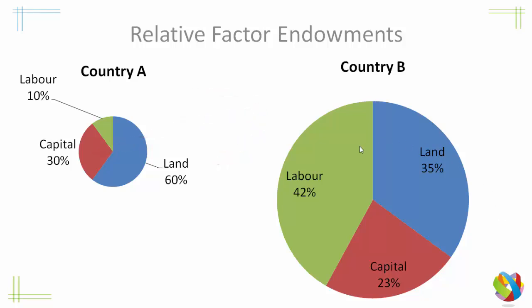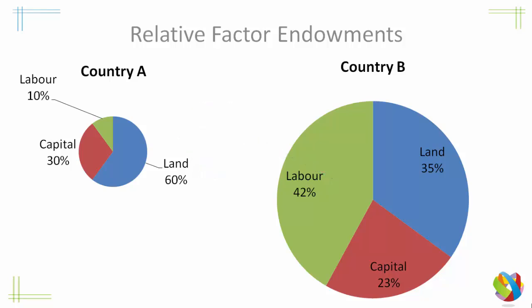And for Country B, well, Country B has a lot of labour — forty-two percent of its factor of production is labour. So Country B would use labour as a factor of production to export to Country A. And this makes sense: if you have a lot of something, it's going to be cheaper relatively. So a lot of labour means that labour is relatively cheap, and therefore you would have an advantage in products that use labour.